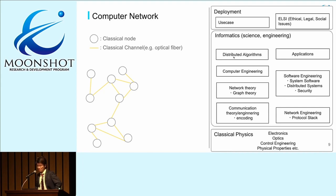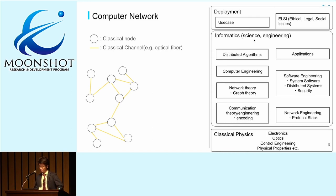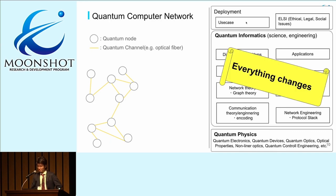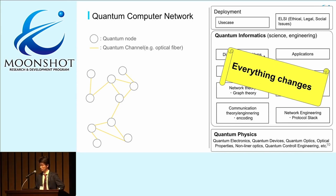This is a subfield view from classical computer networks. At the bottom there is classical physics, electronics, optics, and everything. On top of that are important things like software engineering, network engineering, computer engineering, and so on. Beyond that, there is development of use cases. In the quantum case, the bottom changes — it becomes quantum physics, so informatics also changes to quantum informatics, and everything changes. We have to adapt to those situations.